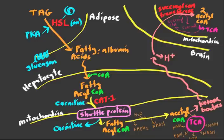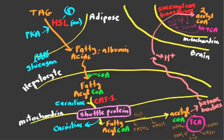This illustrates what's happening during the fasting state: the fat cell, which stores triglyceride, feeds the liver fatty acids so it can run gluconeogenesis. The ATP from fatty acid oxidation is used to run gluconeogenesis, but also provides a secondary fuel source — ketone bodies — that can be used for energy by peripheral tissues.